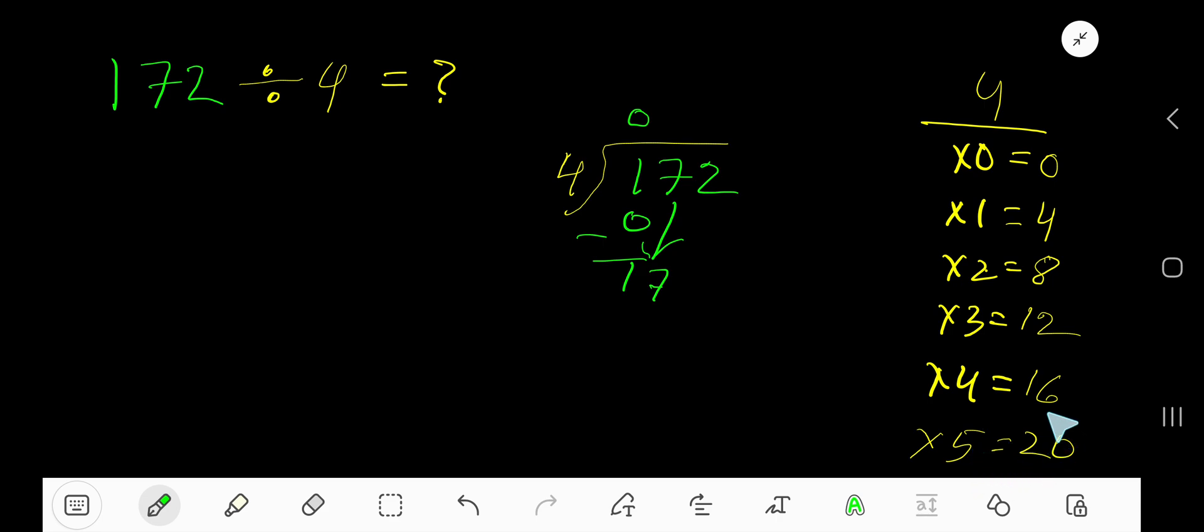5 times would be 20, which is greater. So it's 4 times. 4 times 4 is 16. Subtract 16 from 17, then bring down this 2.